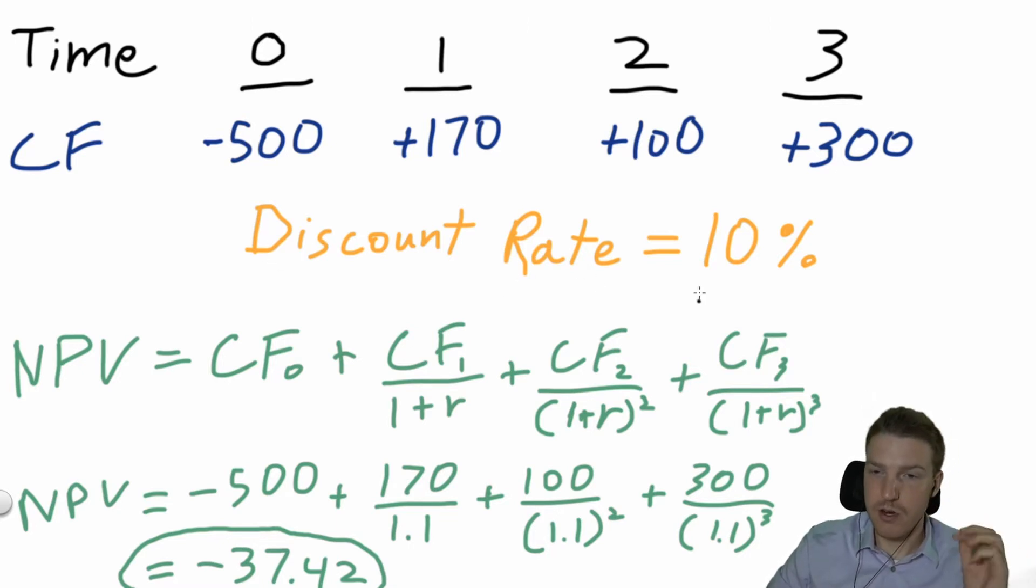For this problem, we're going to assume a discount rate, an interest rate, of 10%. We're using that same formula: NPV equals cash flow zero plus cash flow one over one plus r, plus cash flow two over one plus r squared.